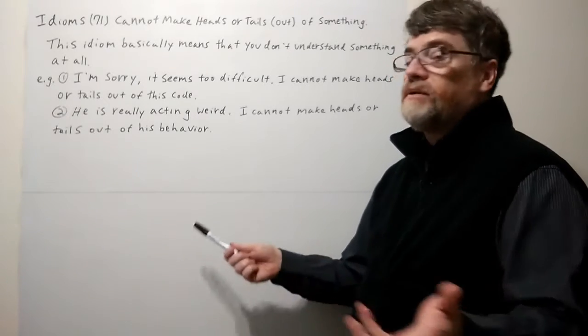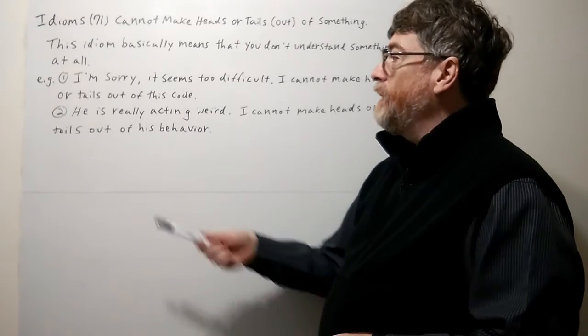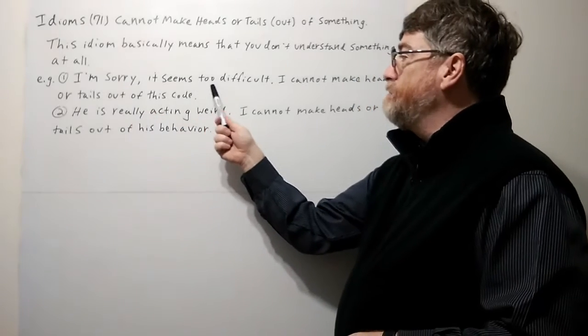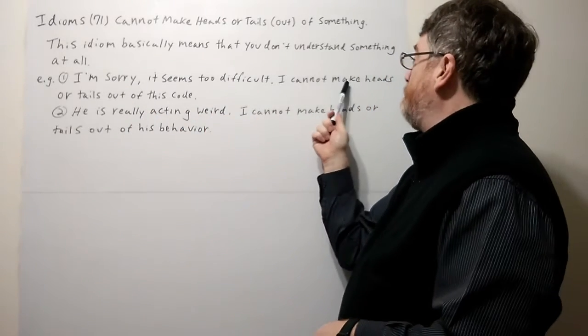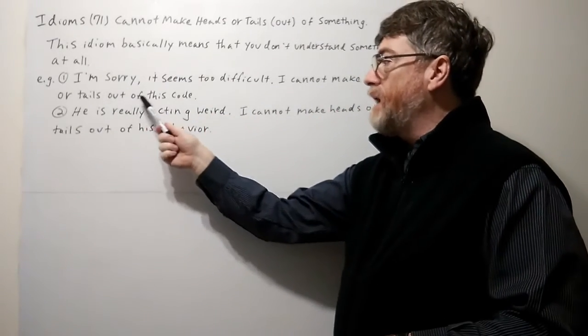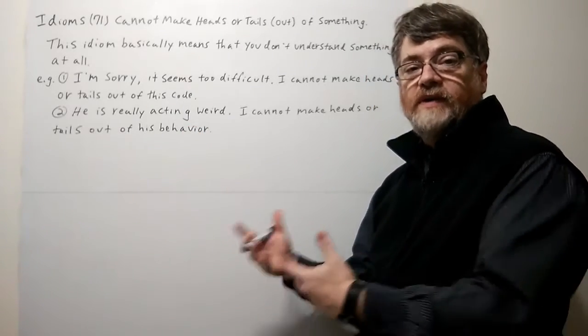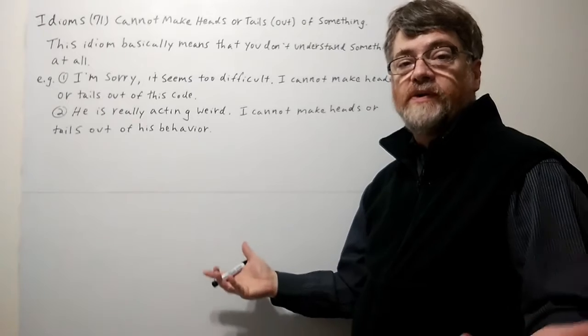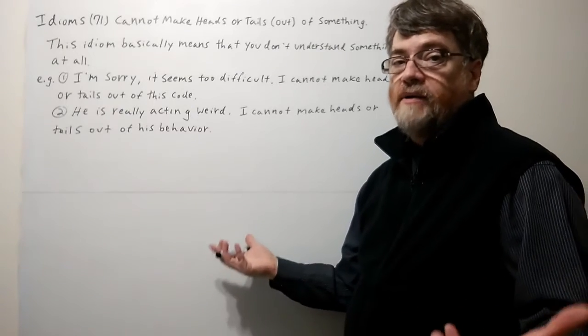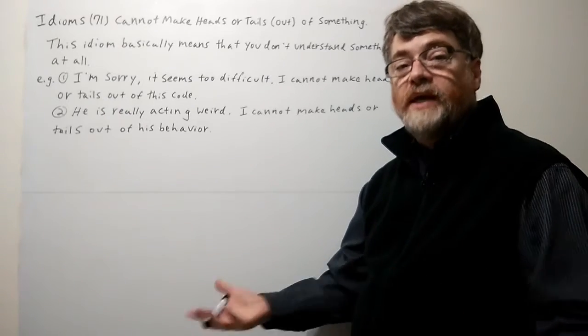So let's look at the first example. I'm sorry, it seems too difficult. I cannot make heads or tails out of this code. Yeah, maybe this is a code breaker. You've given it to him and this one is just too difficult for him. He can't figure it out at all. He doesn't even know where to begin.